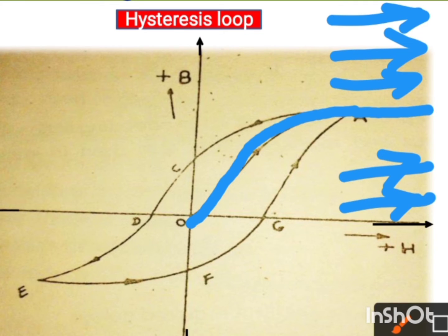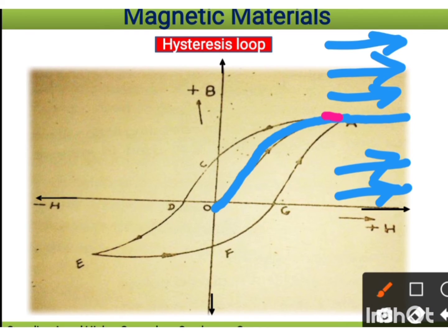At saturation, all magnetic moments align in that direction. Now, if we want to reduce the magnetization to zero, we reduce the inducing magnetic field. We expect it to return from A to zero along the same path, but it does not — because the substance retains some magnetism. So it follows a different path, and even when the applied field is zero, some magnetization remains.